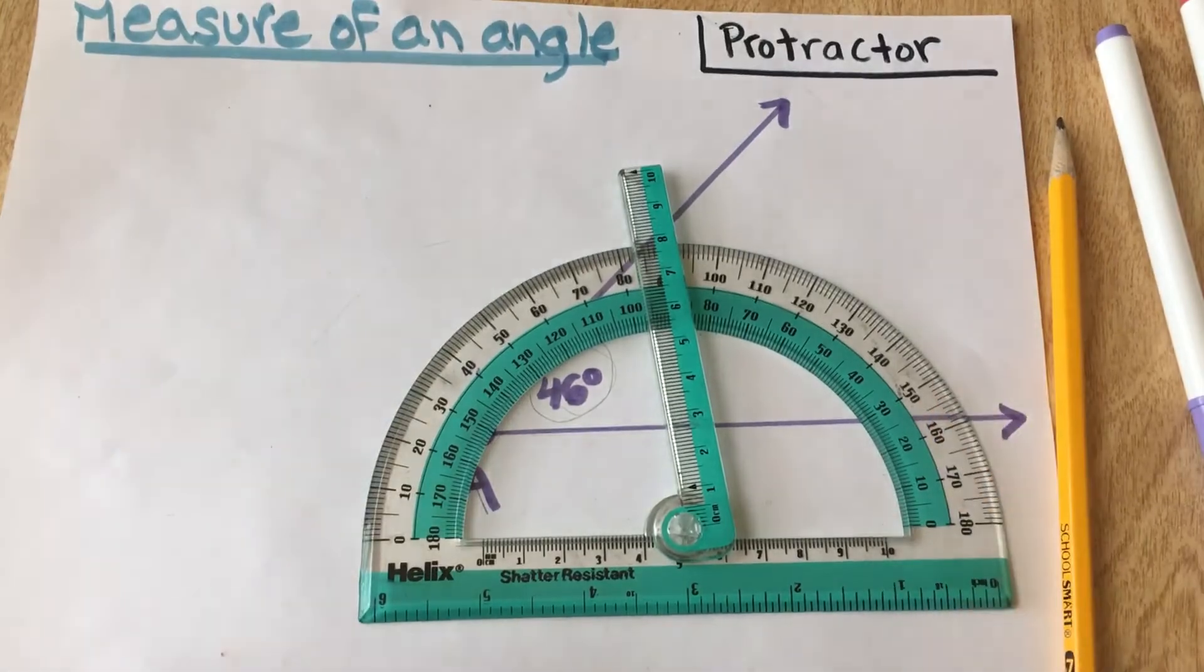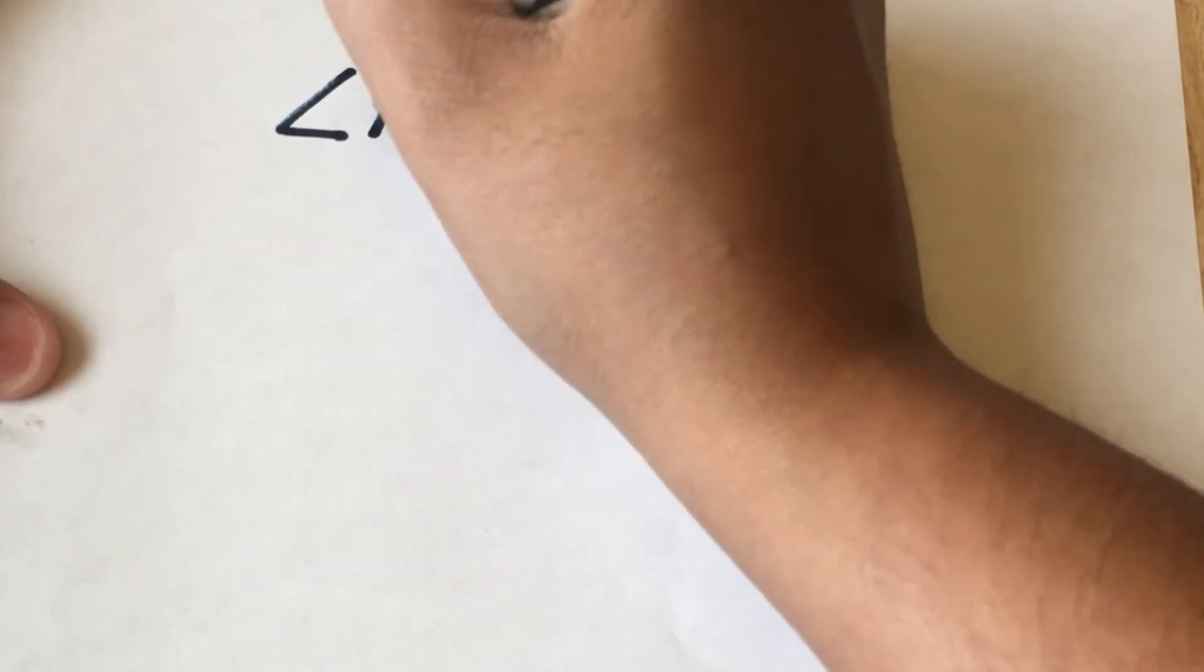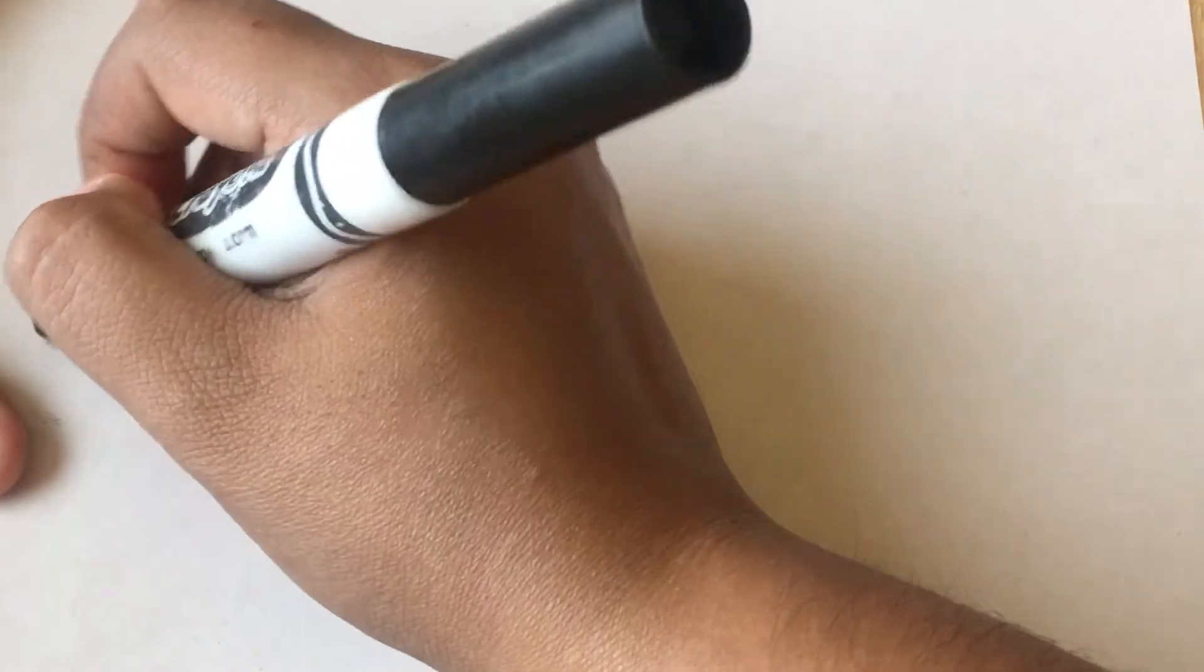And that is how we measure an angle. Before we conclude, let's figure out how to write the measure of an angle. So the angle we just looked at was angle A. That's the vertex of the angle, angle A, that's the name angle A. But we want it now in words.